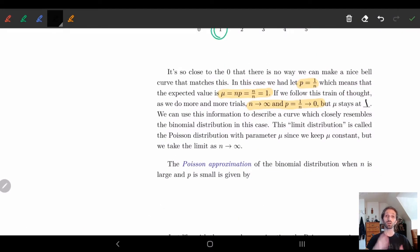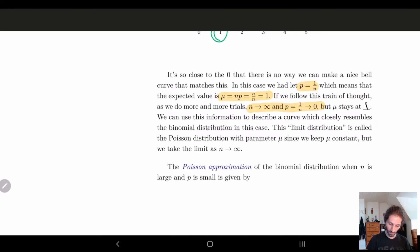So as we keep μ constant we're keeping the expected value constant but we change n and p. This gives us a different distribution, a different approximation, and this approximation is called the Poisson approximation.